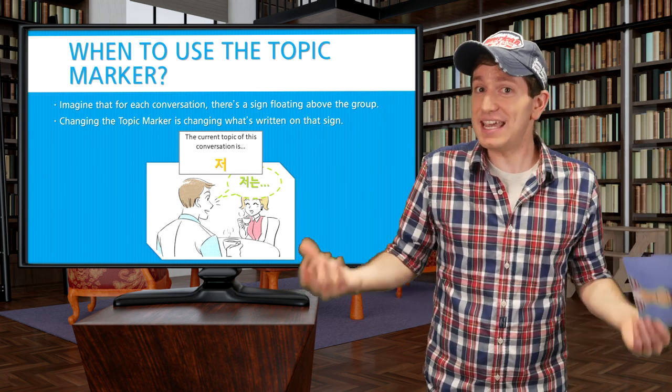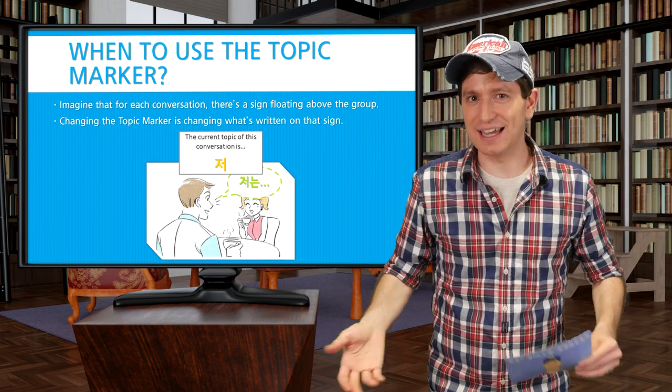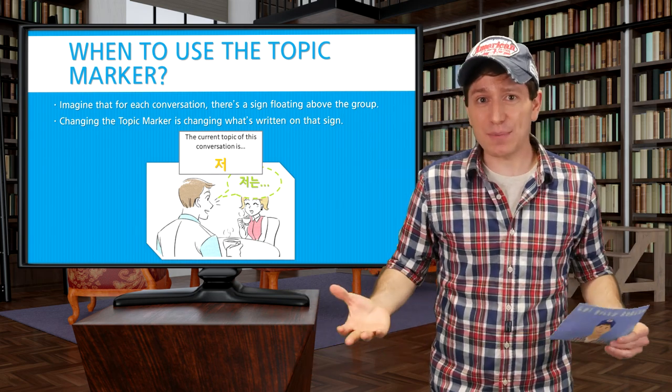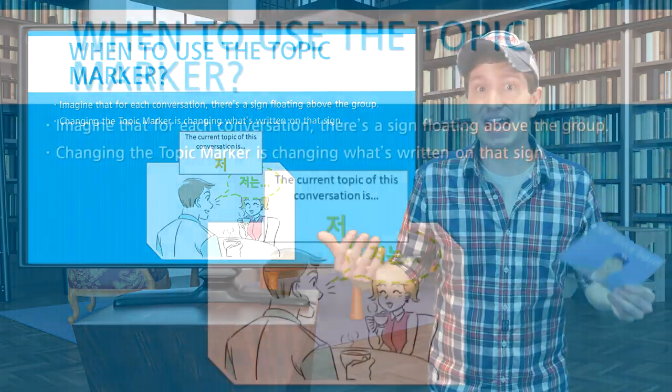If the sign says 피자, well now you're talking about 피자. Anytime you use the topic marker, imagine that this sign that's floating above your group is changing to that noun.